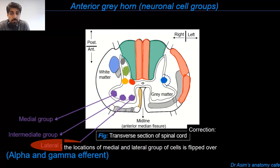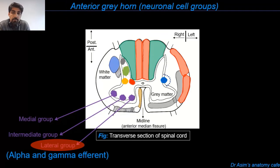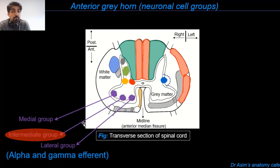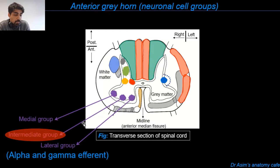The lateral group is present only in the cervical and lumbosacral regions of the spinal cord and innervates appendicular musculature — the upper and lower limbs. The lateral group in the cervical region innervates the upper limb, while the lateral group in the lumbosacral region innervates the lower limb musculature. The central or intermediate group inside the anterior gray horn includes the phrenic nucleus, spanning C3 to C5, which innervates the diaphragm, and the spinal accessory nucleus, present in the upper five or six cervical segments, which innervates the trapezius and sternocleidomastoid muscles.